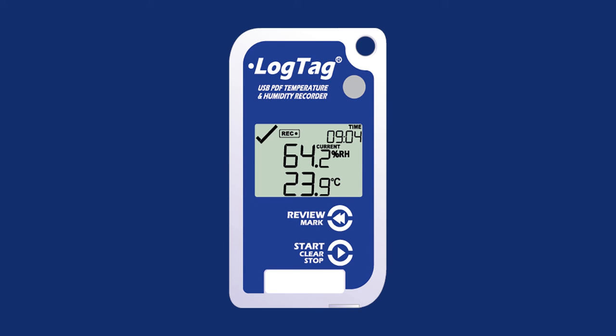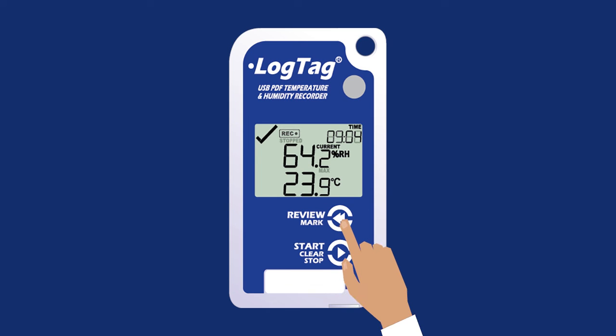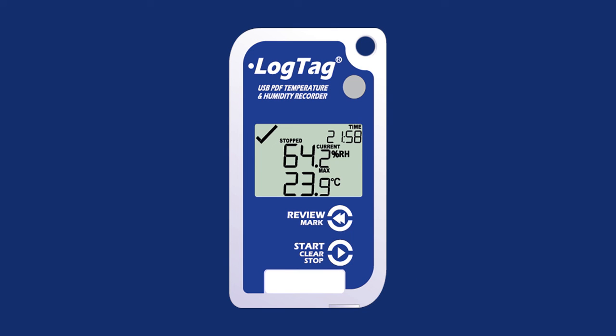If the logger has been configured to stop logging when the Review Mark button is pressed, press and hold the Review Mark button until 'Stopped' appears on the screen and 'Recording' disappears. Once the logger has stopped recording, the latest temperature taken will disappear. A check mark will display if no alarm events were recorded. If an alarm event occurred, a cross mark will appear.